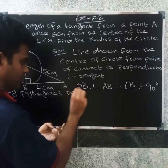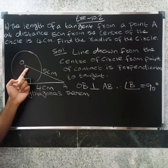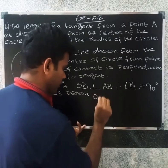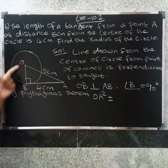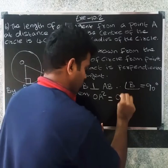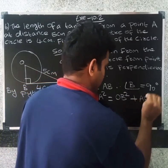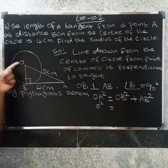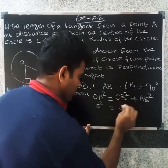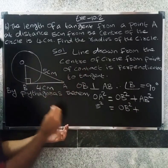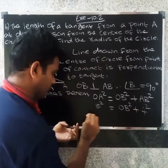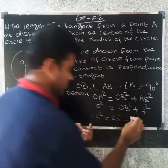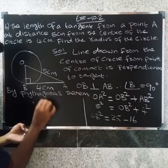By Pythagoras' theorem, the hypotenuse side squared is equal to the sum of the remaining two sides squared. So OA squared equals OB squared plus AB squared. OA is 5, so 5 squared equals OB squared plus 4 squared.